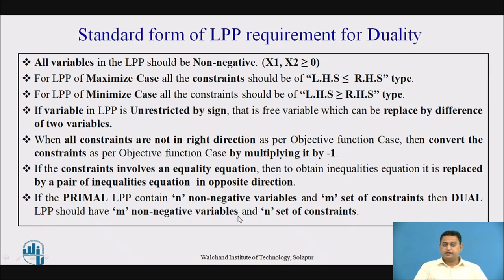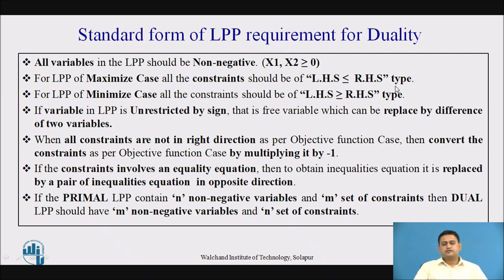In an earlier session, we saw in detail the standard format of the LPP required for duality and the changes needed if necessary. In short, the points to observe are: first, all decision variables should be of non-negative type — x1 and x2 are restricted by the sign greater than or equal to 0. For a maximized LPP, all constraints should have the left-hand side less than or equal to the right-hand side. For a minimized LPP, all constraints should have the left-hand side greater than or equal to the right-hand side.